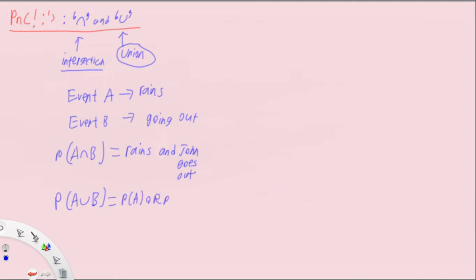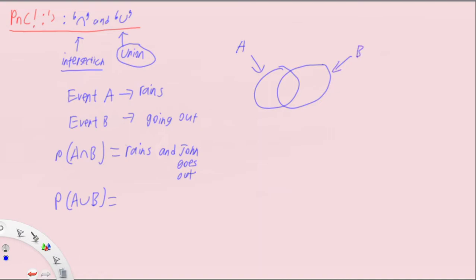Now here's the trick. If we represent this as a Venn diagram, this circle is the probability of A happening, and this circle is the probability of B happening. You notice that there is an intersection where both events can occur at the same time — that overlapping region, shown in red, is P(A intersect B), where both events A and B occur.